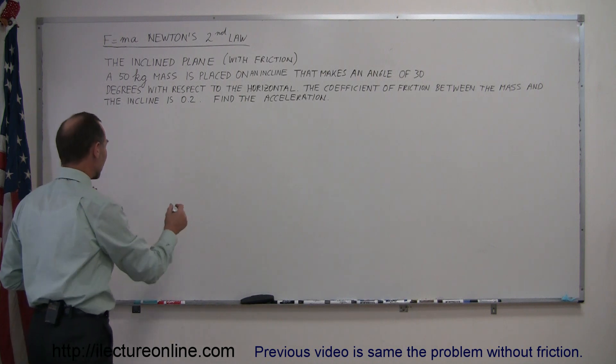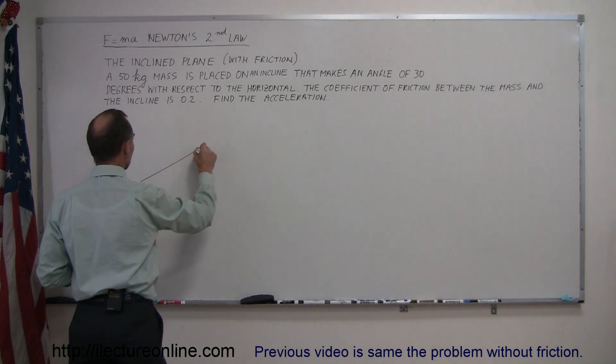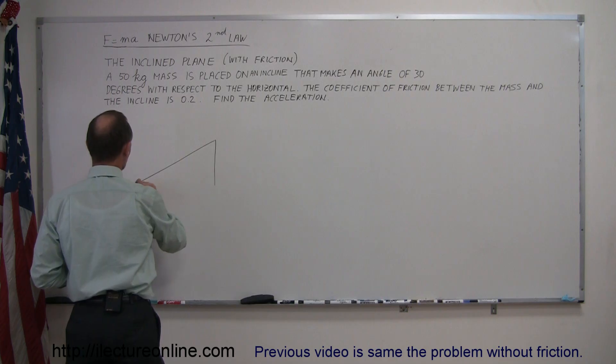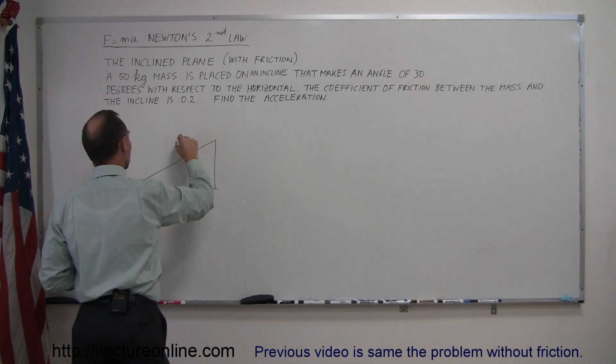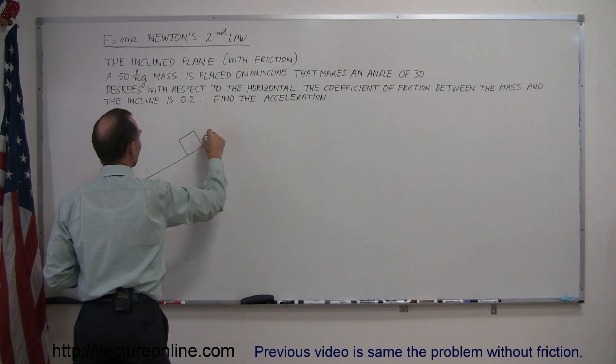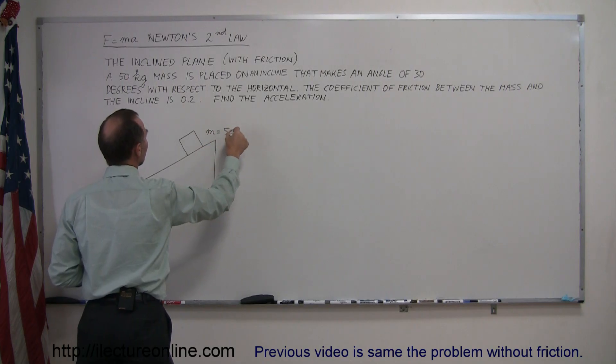So again, we start out by making a drawing, a picture of what's physically happening. So here we go. We have a mass on an inclined plane. We say that the mass is equal to 50 kilograms.